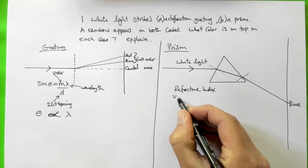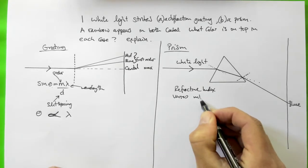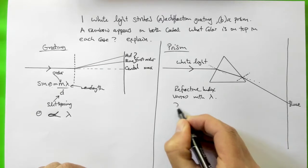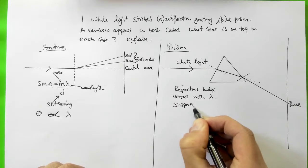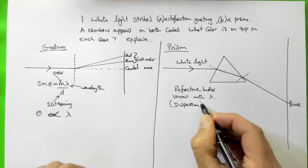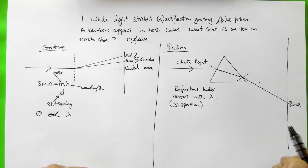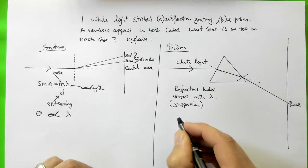This is called dispersion. That's the word: dispersion. And the dispersion relation is such that the refractive index is always smaller for longer wavelengths.